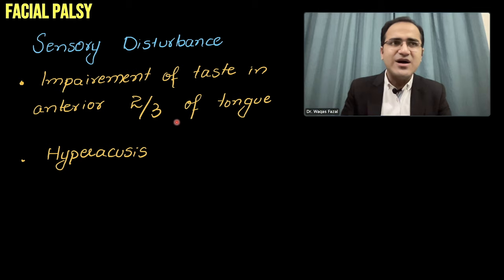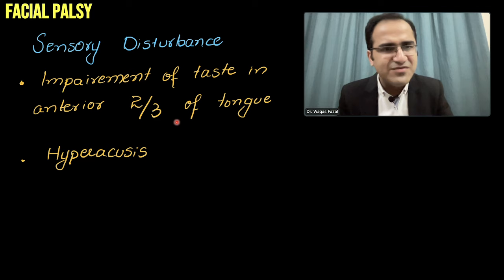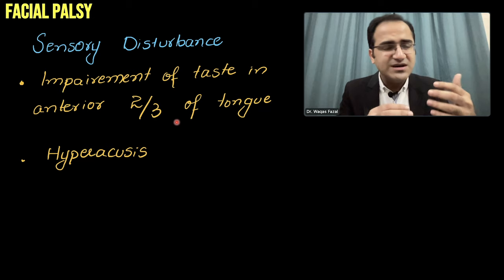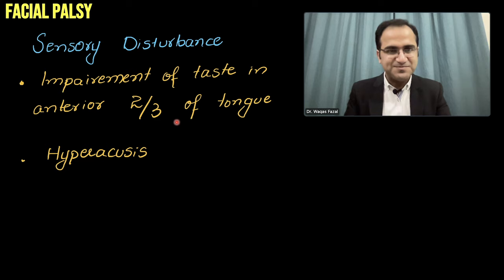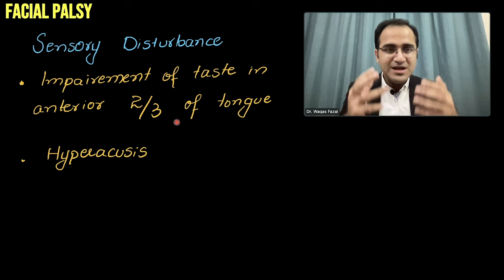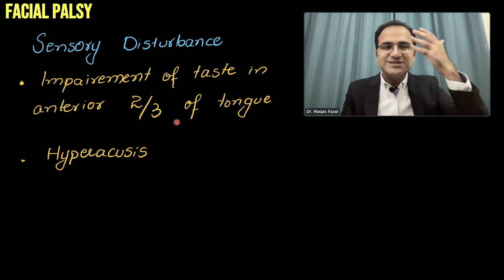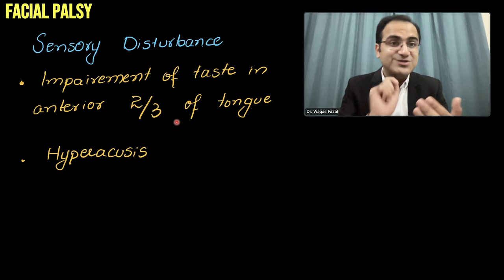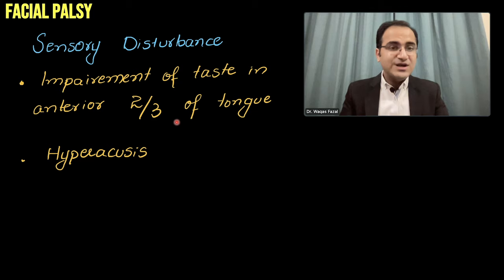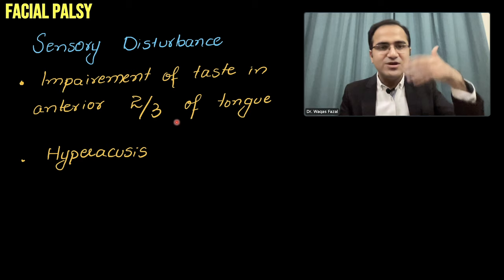My father also got Bell's palsy recently. One morning he called me and told me he could not feel the right side of his face. I asked about various symptoms — whether he had numbness in the right side of the body — everything was normal; just numbness on the right side of the face. On a video call I could see his facial palsy because when he was talking, one side of his face was not moving properly. He is totally okay now — he fully recovered. It was a Bell's palsy lower motor neuron lesion.